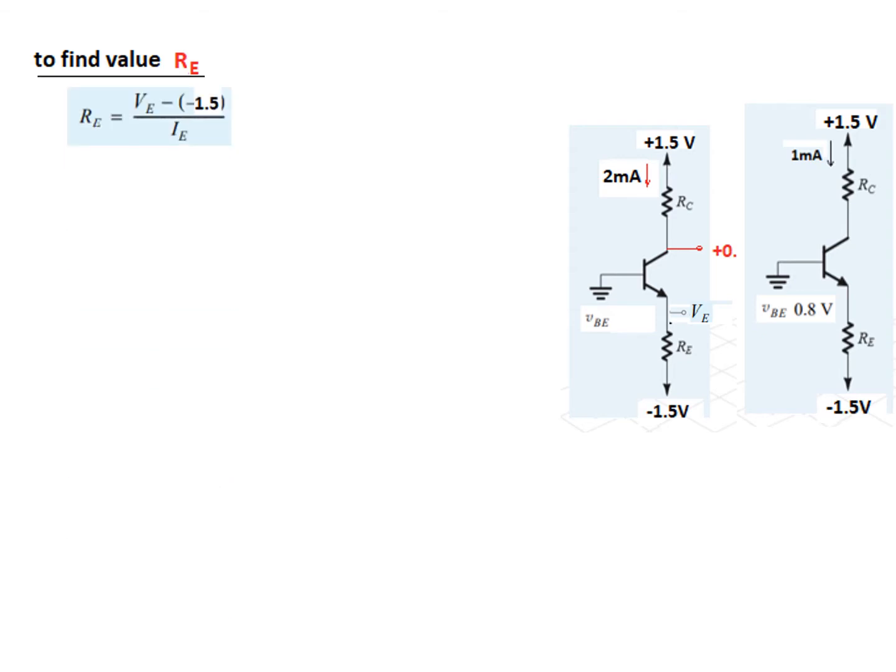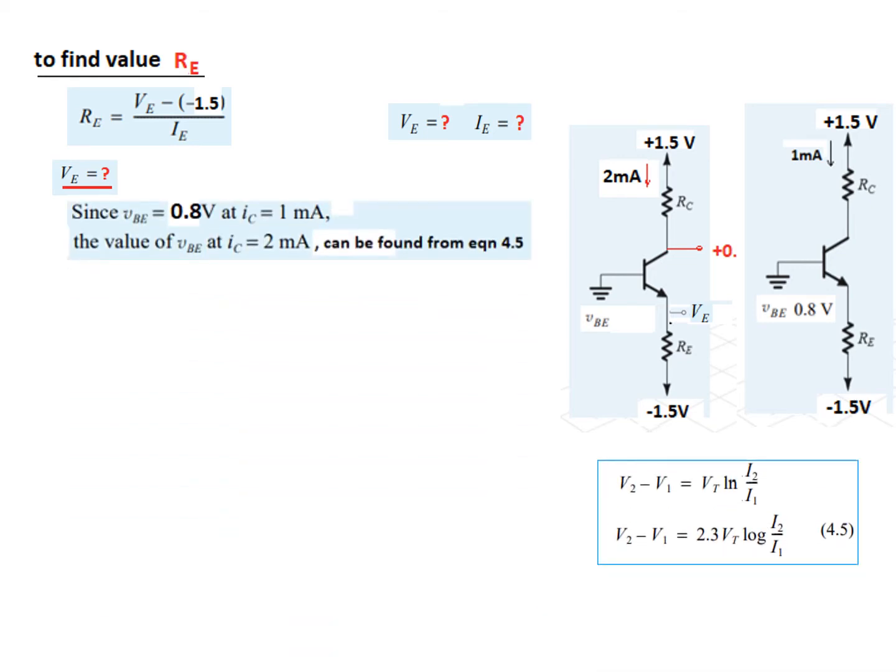First of all, this is the formula for RE. You can see from here, if we know VE, then VE minus minus 1.5 divided by this current will give us RE. So, VE minus minus 1.5 divided by IE. Now, the question is, we don't know VE, we don't know IE. Now, we have seen in the previous video exactly the same thing. There are two points given, VBE, this voltage here, is 0.8 when current IC is 1 milliampere.